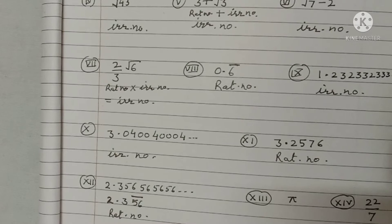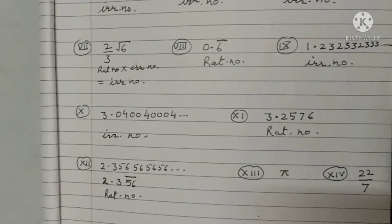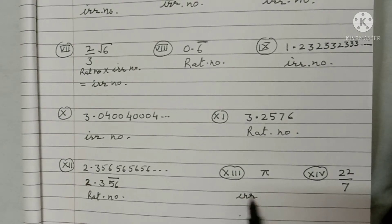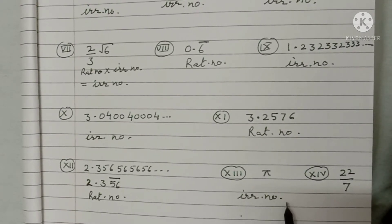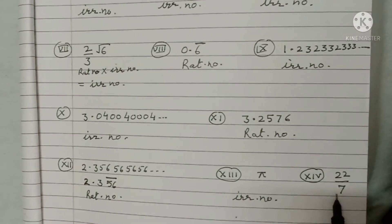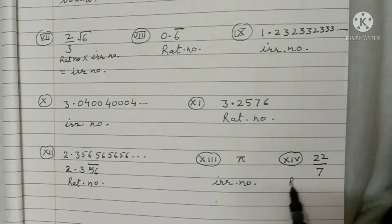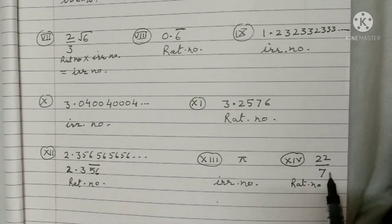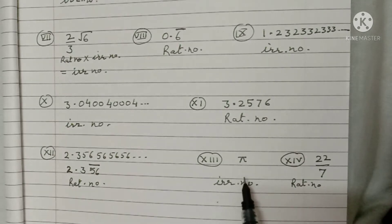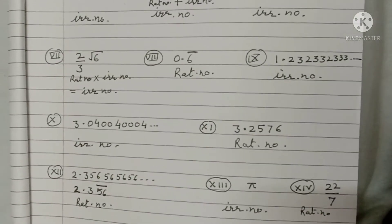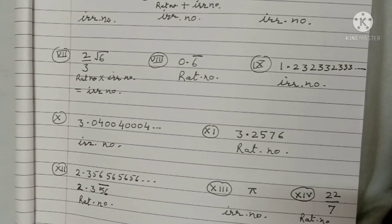Regarding pi: if we take pi itself, it is written as an irrational number. But if you take the value of pi as 22/7, then you take it as a rational number because it is in the form of P/Q. So pi is irrational and 22/7 is rational. These are all parts of question number 2.